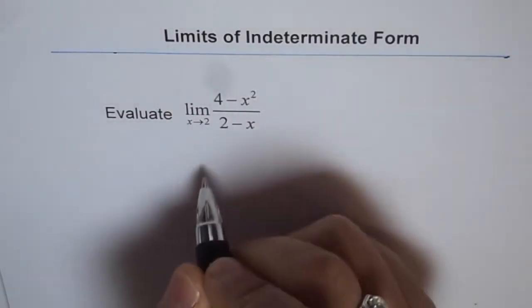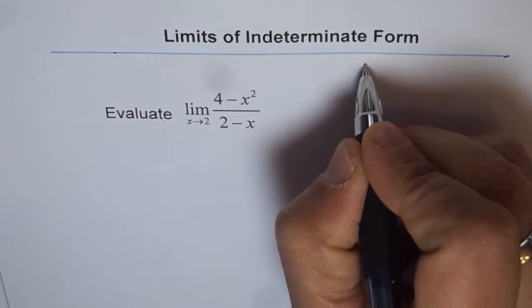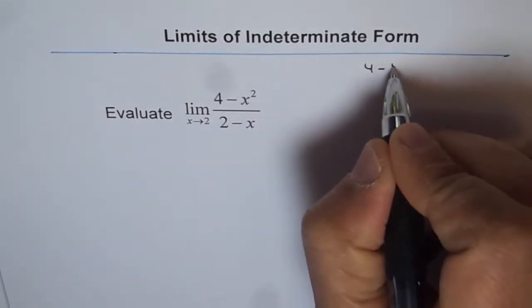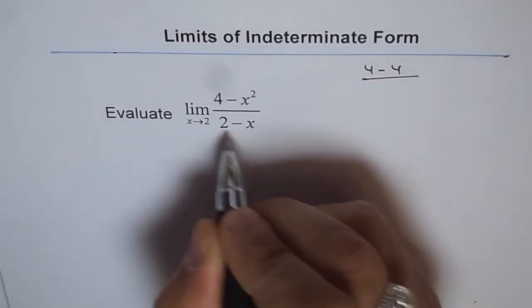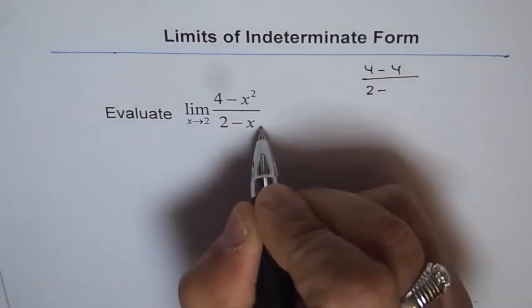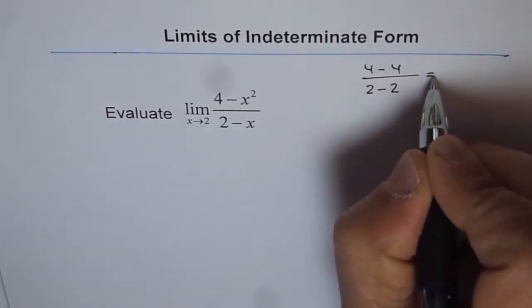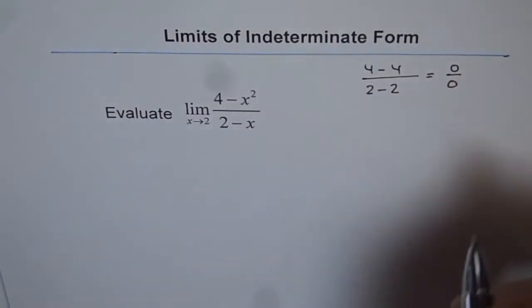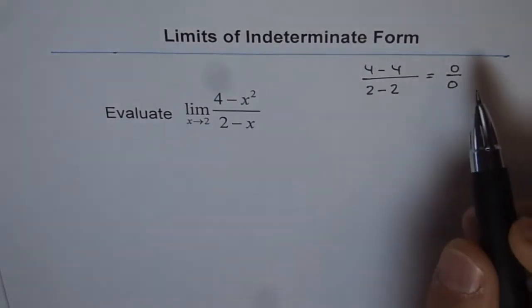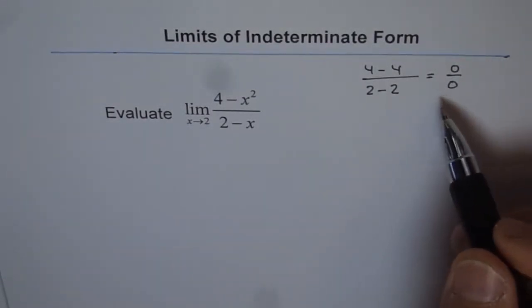So if I write 2 for the x then we get 4 minus 2 squared which is 4 divided by 2 minus 2 equals to 0. So we get 0 over 0 form. That is indeterminate form of the quotient.